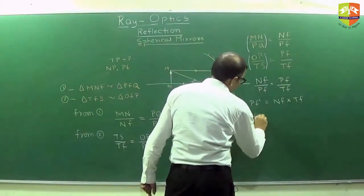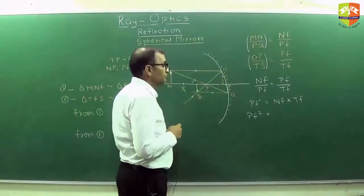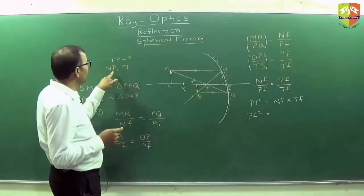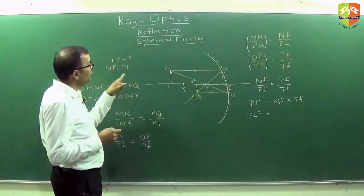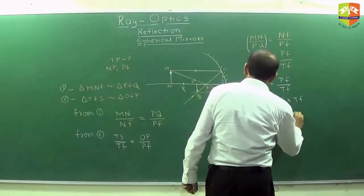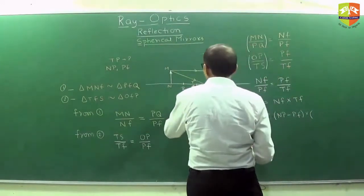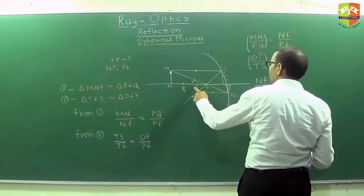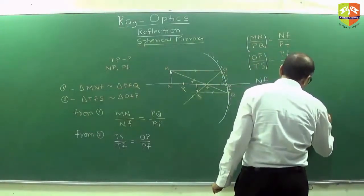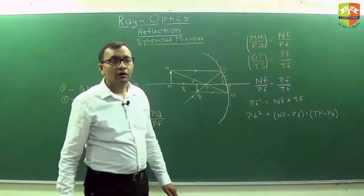I can further write this: PF squared equals NF times TF. What is NF? Is NF known? No — NP and PF are known. So NF equals NP minus PF. What is TF? TF equals TP minus PF. TP is what you have to find out, so it should come in the equation. TF equals TP minus PF.